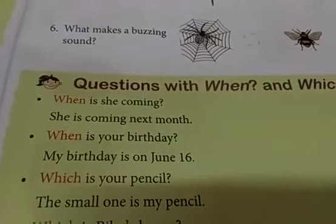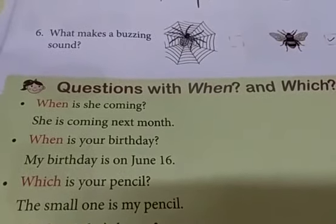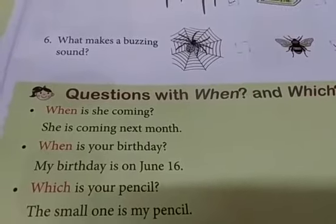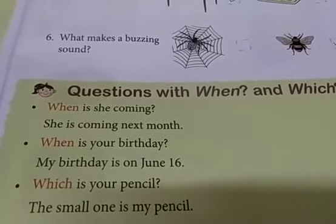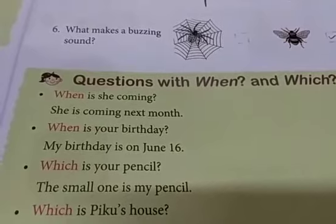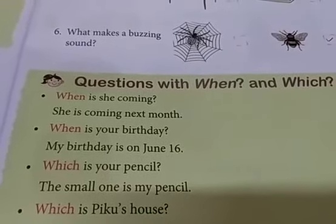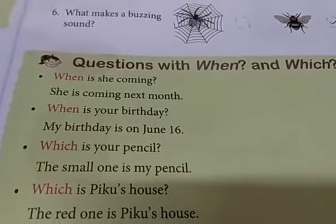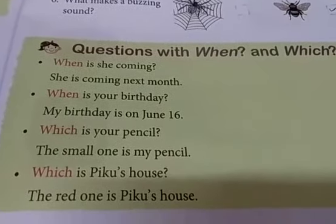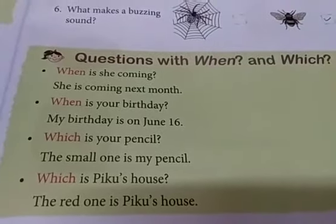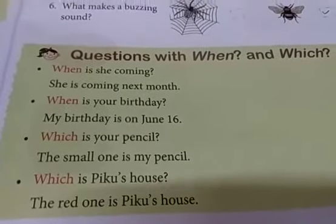Next, questions with when and which. This also starts with WH. When is she coming? She is coming next month. When is your birthday? My birthday is on June 16th. Which is your pencil? The small one is my pencil. Which is Piku's house? The red one is Piku's house.